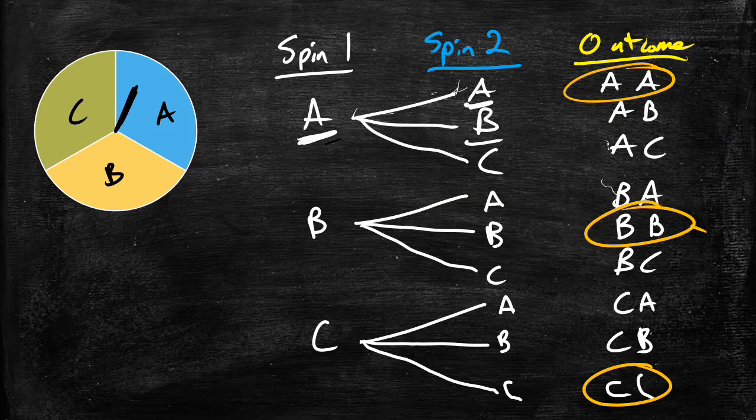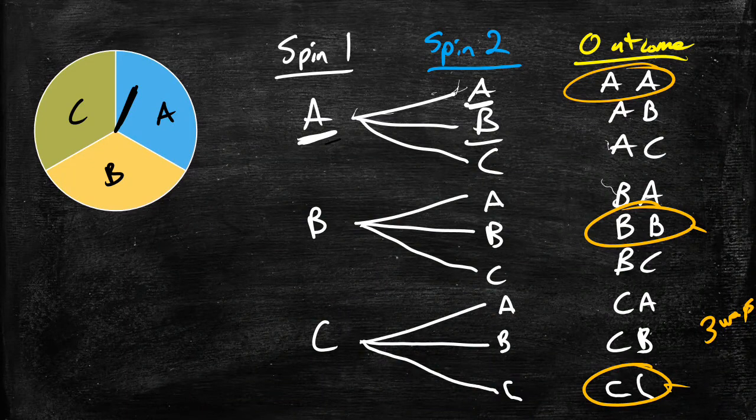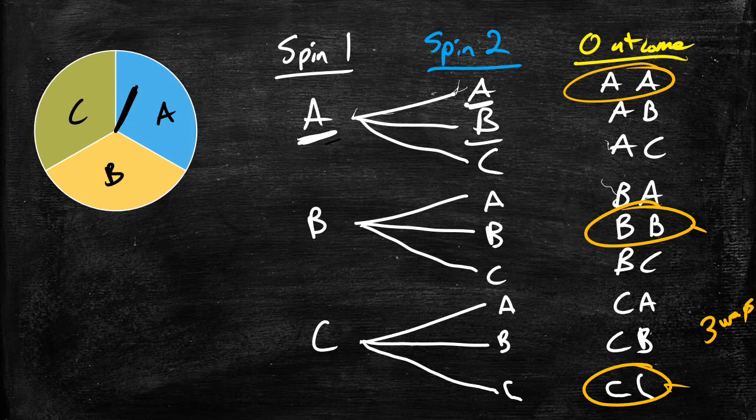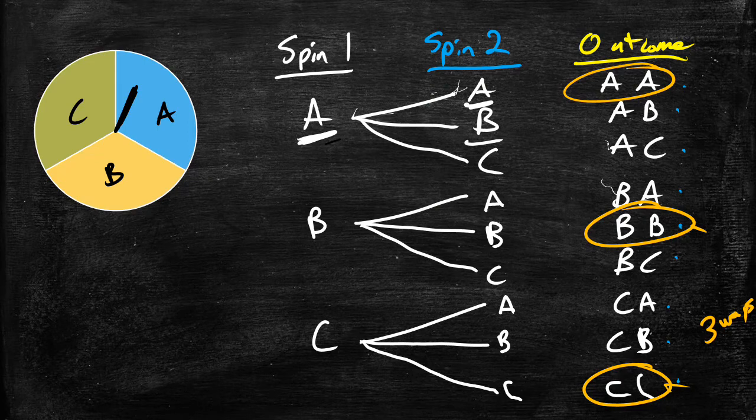So this means getting an A twice, a B twice, and a C twice. And we can look at that probability and how many ways are there. It appears that there are three ways to do that. How many total outcomes are there from this spinner experiment? It looks like there is one, two, three, four, five, six, seven, eight, and nine.